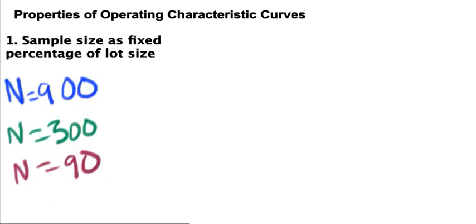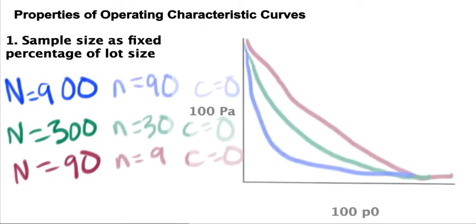So in this example, we have three different lot sizes, and they are 900, 300, and 90. Let's compare what happens when our sample size is 10% of the lot size. So the corresponding sample sizes will be 90, 30, and 9.